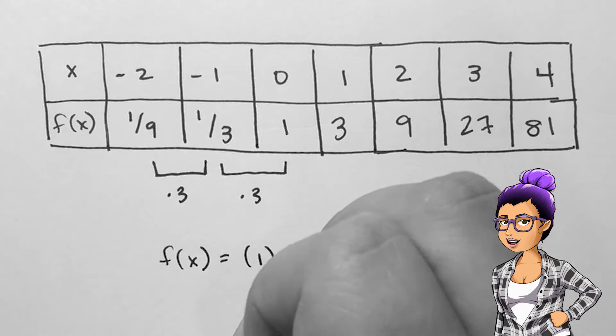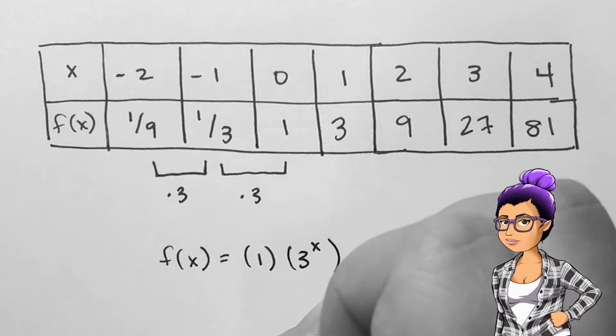1 is our y-intercept, and 3 is our growth factor. So we would represent this function as an equation with f(x) = 3^x.